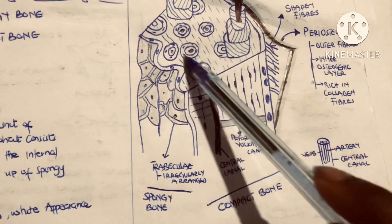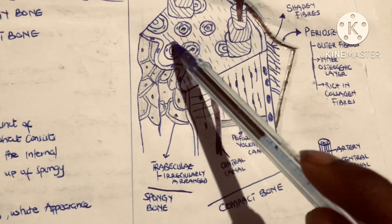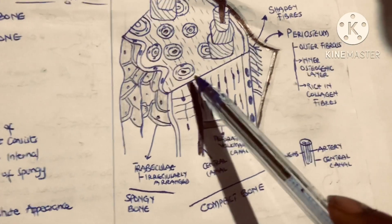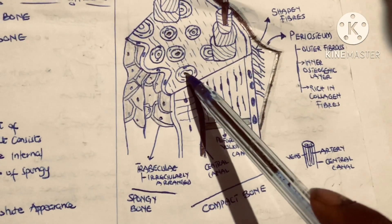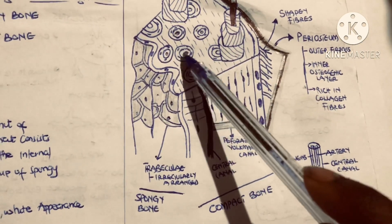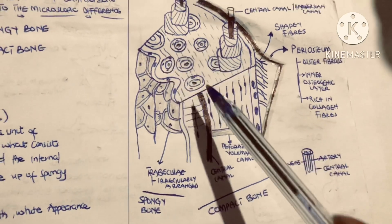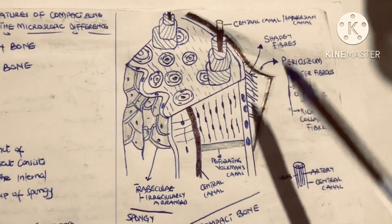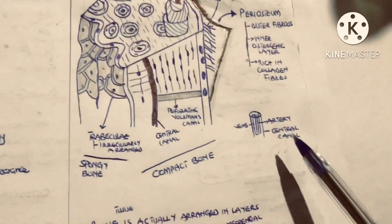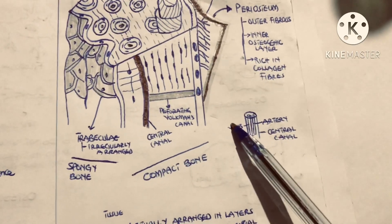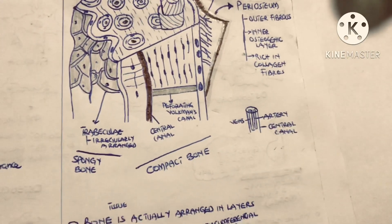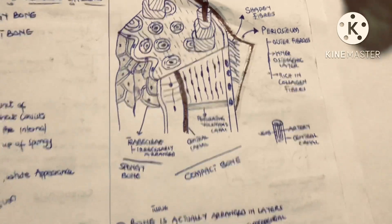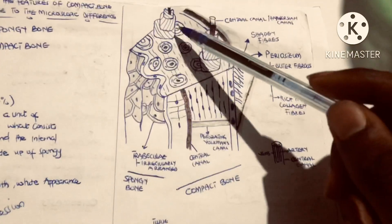The concentric lamellae are circular shaped. Within the concentric lamellae there is a structure called the central canal — some people also call it the Haversian canal. Within the central canal you can find veins, arteries, and also nerves.